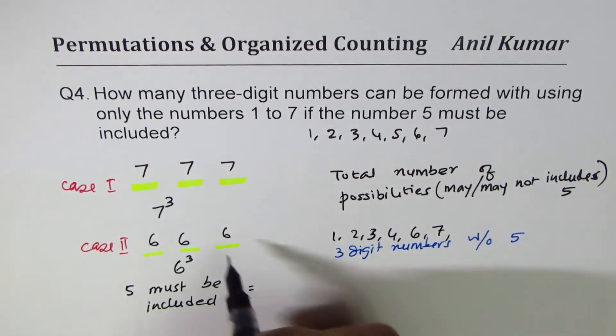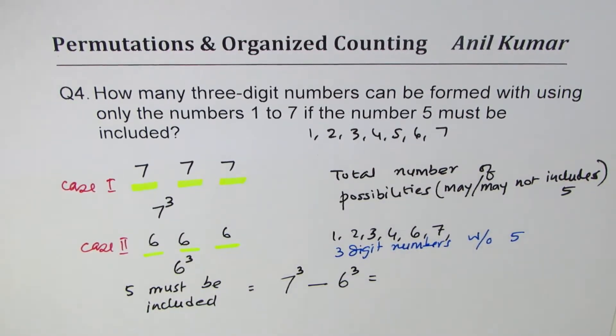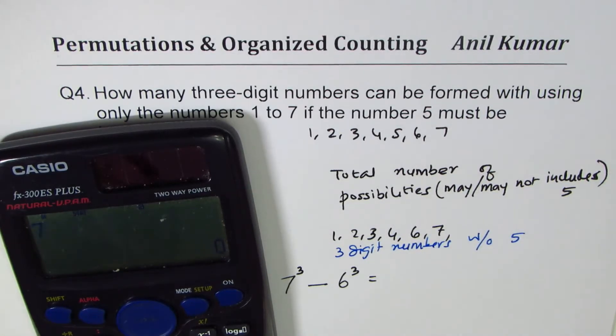That means the total number should be all 7³ minus those in which 5 is not included, which is 6³. So that becomes the solution for the given question. At times you may have to apply some strategies. Let's do it, so we have 7³.